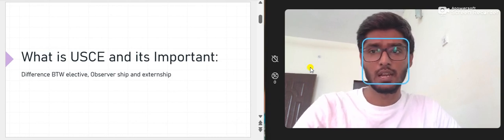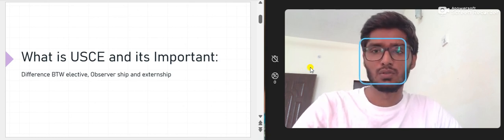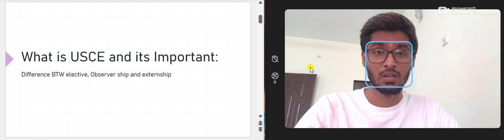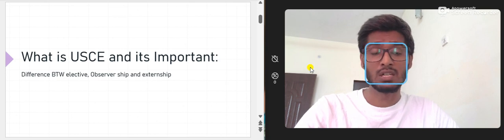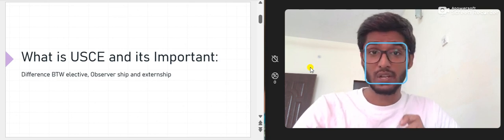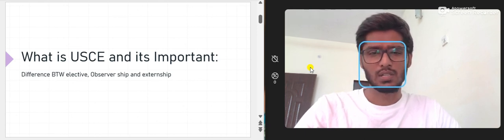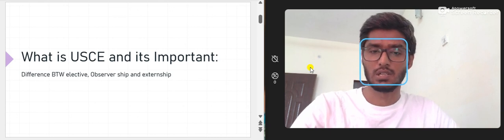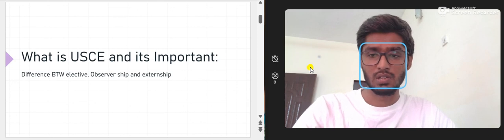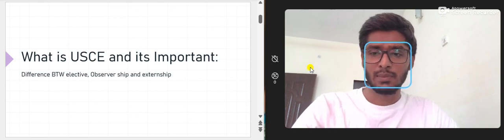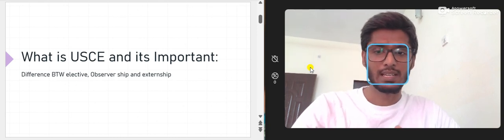USCE is an acronym for United States Clinical Experience. Whenever you apply for residency — after getting done with Step 1, Step 2, maybe Step 3 — you need at least three letters of recommendation from a hospital or clinic in the US. I would say letters of recommendation are very important for your CV when applying for internal medicine residency or whatever specialty.